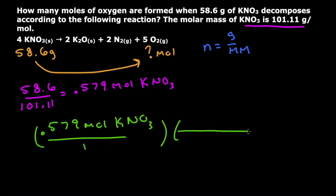it tells me that for every four molecules of KNO₃, I'm going to produce five moles of oxygen right here, this O₂ oxygen.